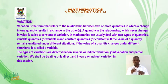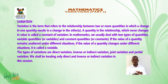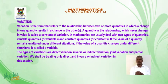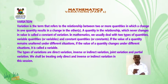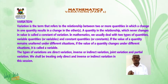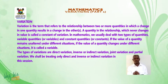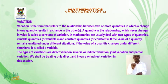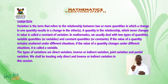If the value of a quantity remains unaltered under different situations, it is called a constant. If the value of a quantity changes under different situations, it is called a variable. The types of variations are direct variation, inverse or indirect variation, joint variation, and partial variation.